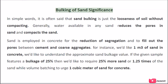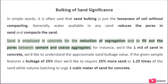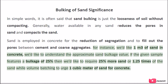Bulking of sand significance: In simple words, sand bulking is the looseness of sand without compacting. Generally, water available in any sand reduces the pores in sand and compacts the sand. Sand is employed in concrete for the reduction of segregation and to fill out the pores between cement and coarse aggregates. For instance, if we need one cubic meter of sand in concrete, we need to know the approximate sand bulkage value. If the given sample has a bulkage of 25%, then we need to take 25% more sand, or 1.25 times the sand volume, while volume batching to get 1 cubic meter of sand for concrete.